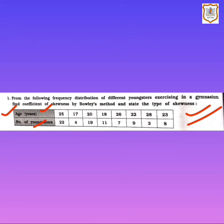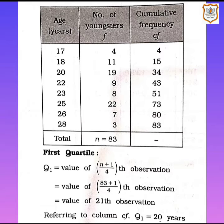For Bowley's method, we first need to find Q1, Q3, and the median. For that we have to arrange all discrete data in ascending order. Here we have prepared the table with age and frequency columns.